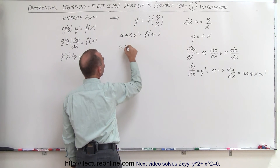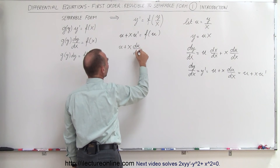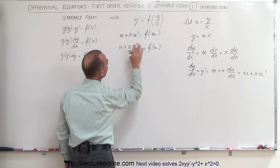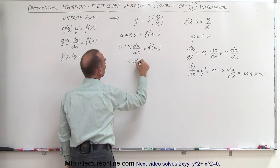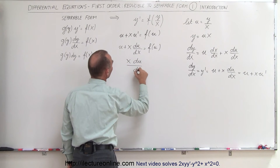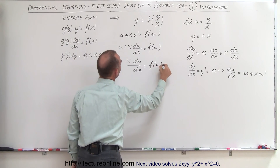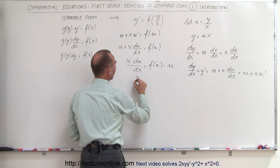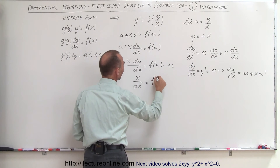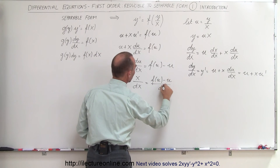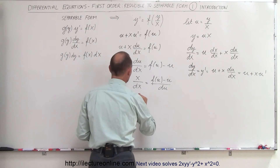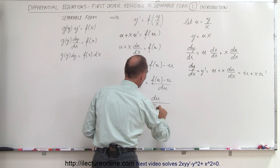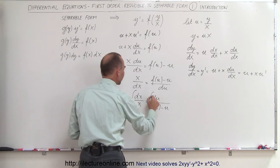At that point we separate the variables. We write u + x·(du/dx) = f(u), then move u to the other side: x·(du/dx) = f(u) - u. Rearranging, we get dx/x = du / (f(u) - u), and then we can go ahead and integrate both sides of the equation.